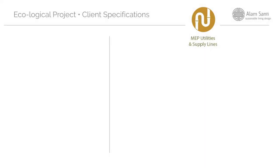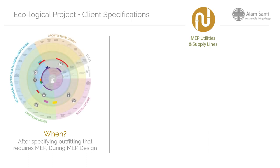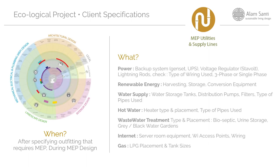The next category is utility lines. Generally, the client will sign off on what's recommended by the MEP designer, especially one experienced in ecological MEP design. Decisions here include power supply — are you using renewable energy? Water systems — are you using rainwater harvesting? What will you use for hot water heating? What do you want to do with your wastewater — a very interesting topic with many eco strategies? What type of internet do you need? And any gas considerations for your project.